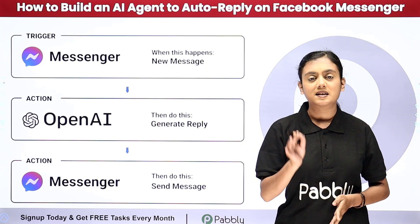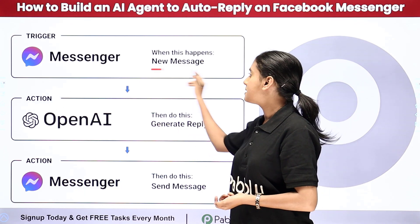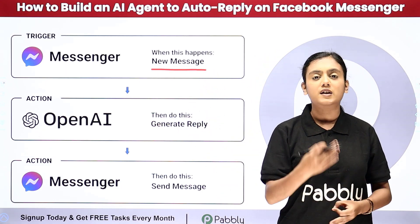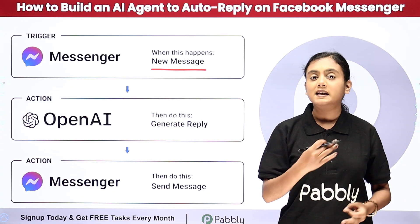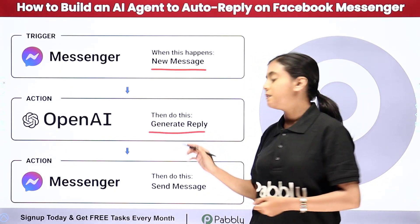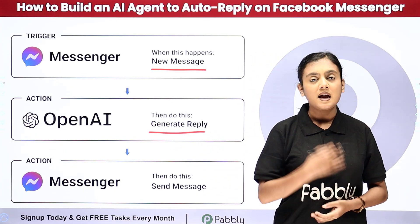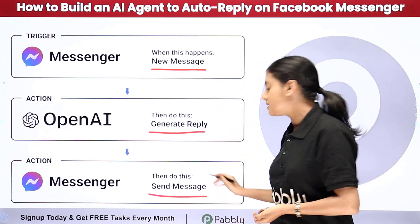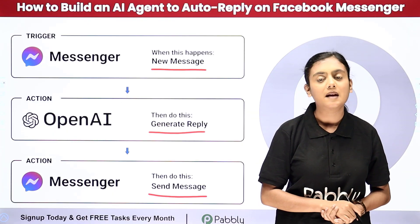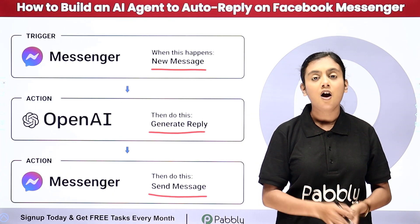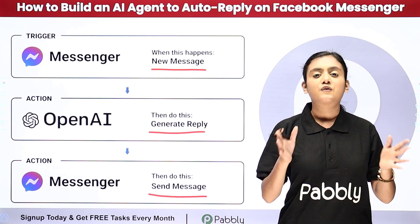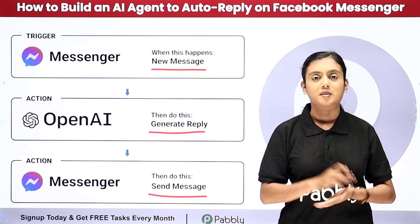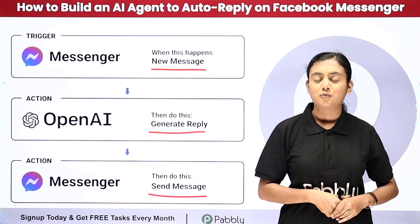How this AI agent works is that as soon as I receive a new message from a potential customer or client on my Facebook Messenger, automatically an AI agent is going to generate a reply to the message. And as the reply is generated, automatically that same AI agent is going to send that reply to the same customer on Facebook Messenger. If you also want to learn how to create this AI agent for yourself and your business, let me take you to my screen.